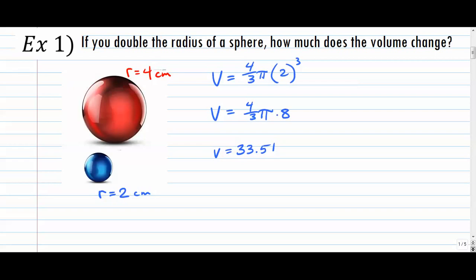The red one has a volume of four-thirds pi times four to the third power, which comes out to about 268.083. As you can see, if you double the radius of a sphere, the volume doesn't double — if it did, this would be about 67. But it grows disproportionately, which is kind of interesting.